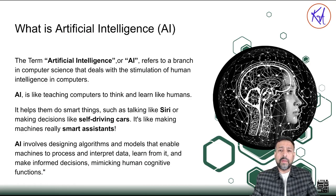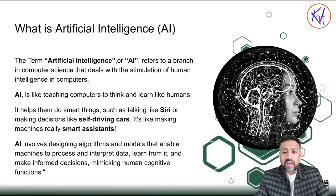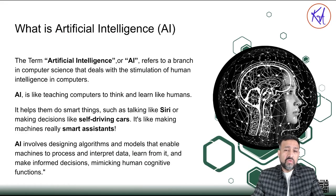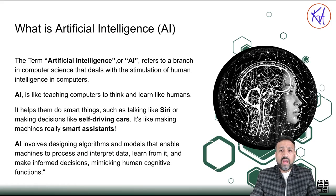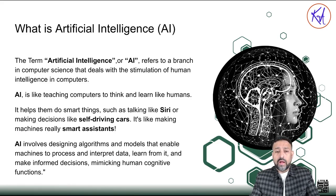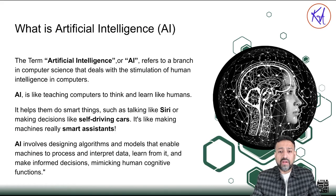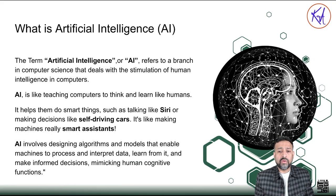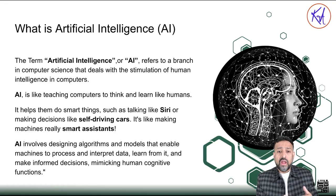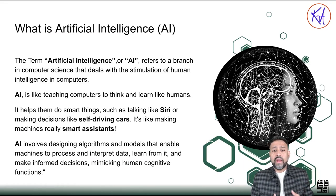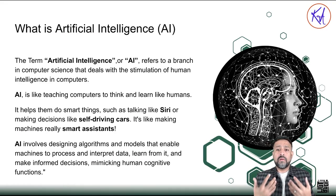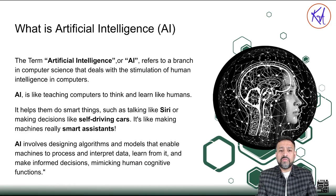AI has many useful applications in our day-to-day life, and we are currently already using it. For example, electric cars like Tesla self-driving cars, smart assistants like Siri, Amazon Echo, and Alexa — they use natural language processing to respond to you. There are also many automated robots in manufacturing and distribution, like in Amazon Fulfillment Centers where cars are assembled by robots. All of these are being done by artificial intelligence.